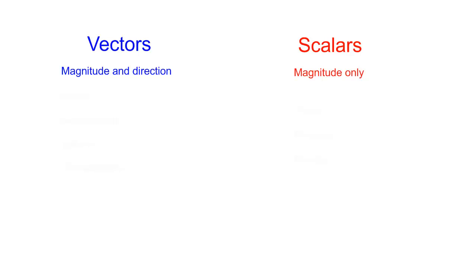Some examples of vectors would include force, acceleration, velocity, and displacement, while scalars include speed, distance, and energy.